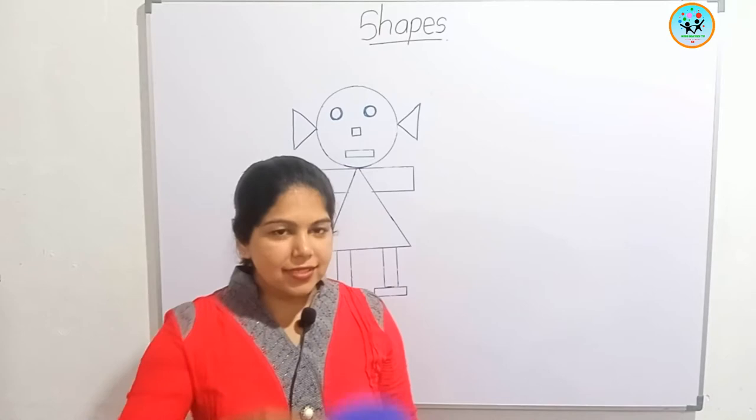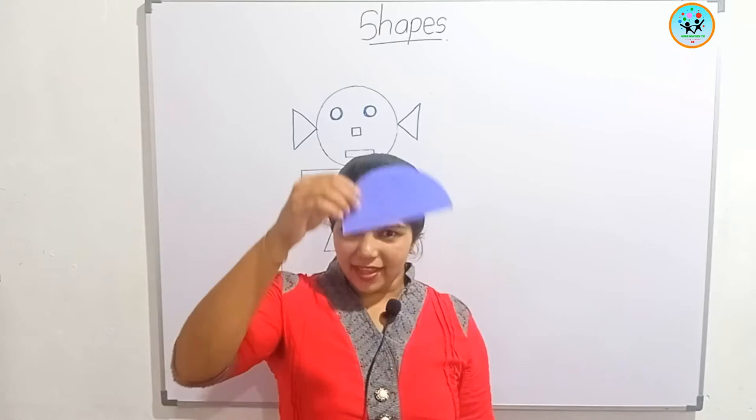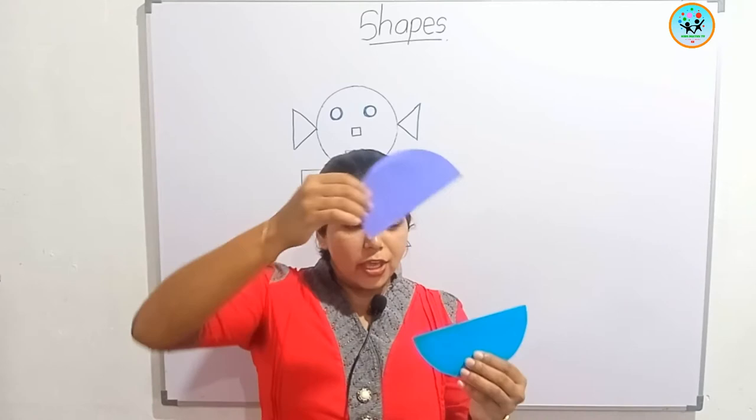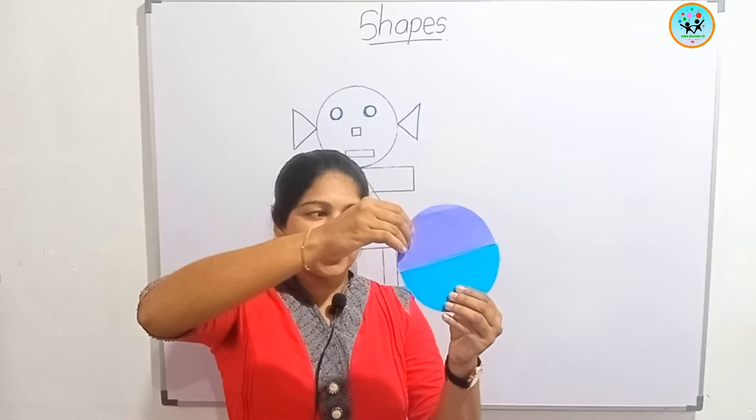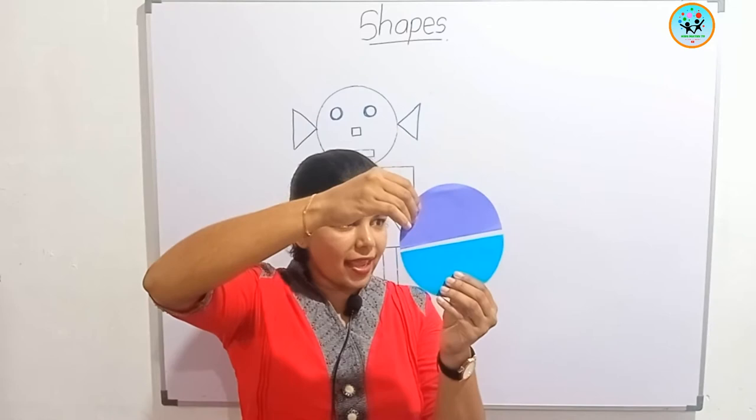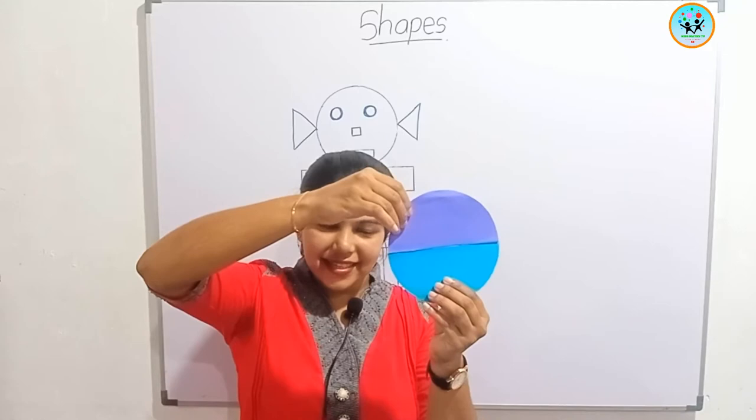I have a semicircle. Two semicircles make a circle. Look at this — two semicircles make a circle, like this.